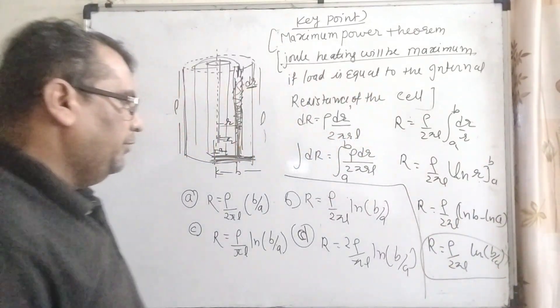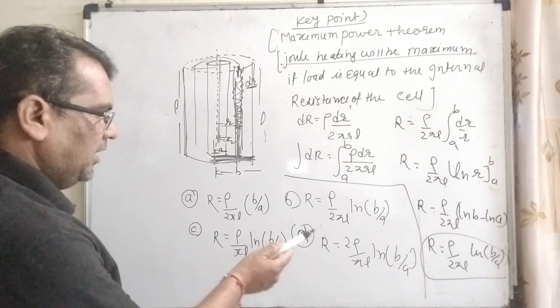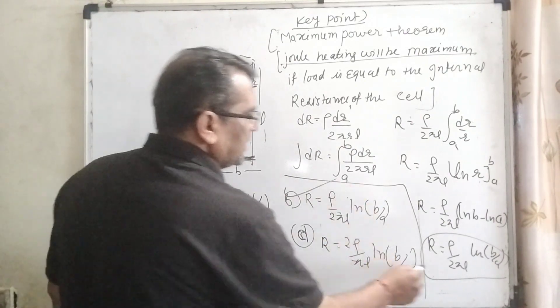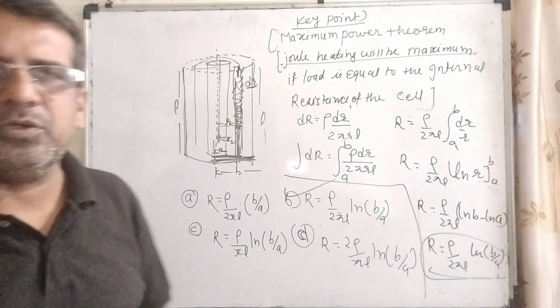Let us check which option is correct. You can see R equals rho by 2πL times ln... yes, B is the correct answer. I hope you understand this question.